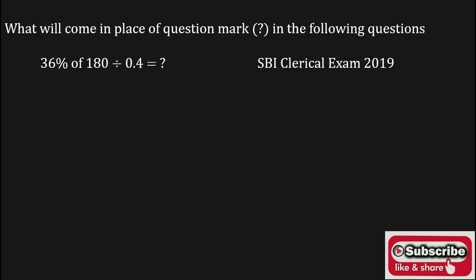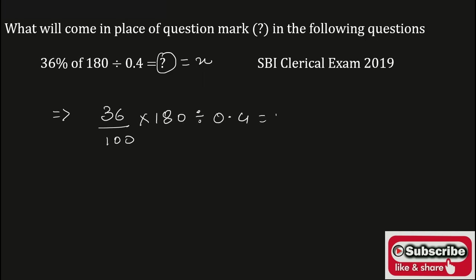36% of 180 divided by 0.4 is equal to what? In place of the question mark, consider it as equal to x. Now 36% can be written as 36 upon 100 of 180, into 180 divided by 0.4, is equal to x.